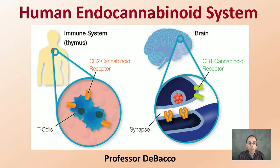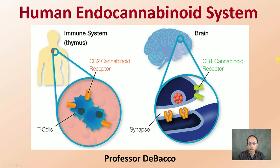Focusing on these receptors — as a side note, the CB2 receptor is involved with the immune system, found in the thalamus, and the CB1 receptor is in the brain.